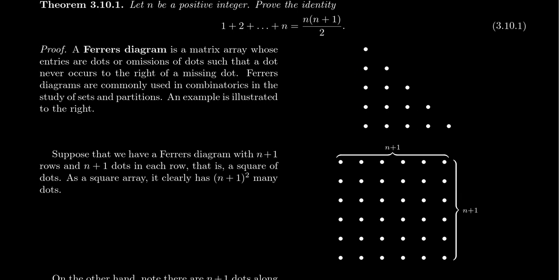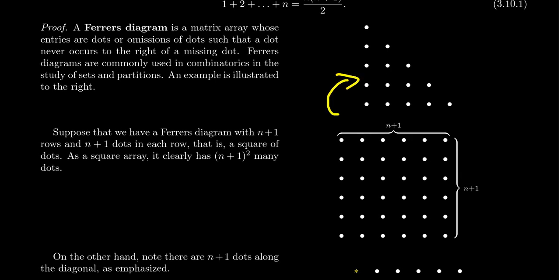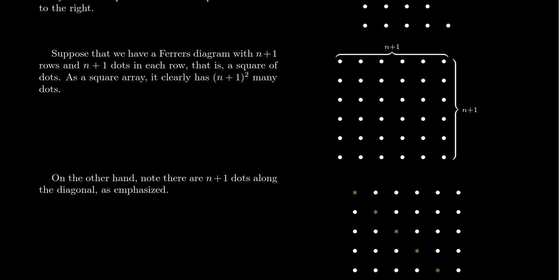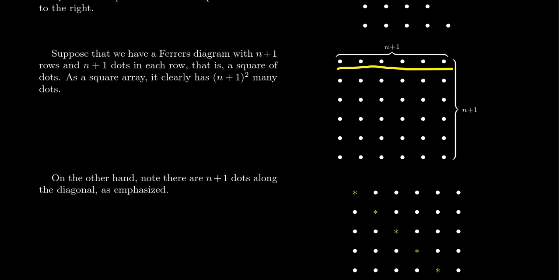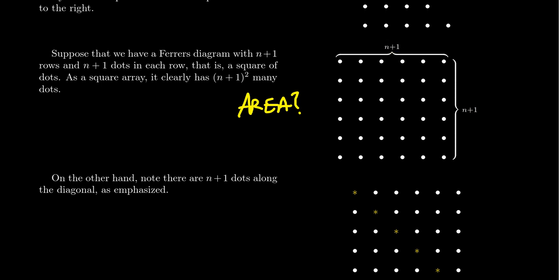Instead, I'm going to consider the Ferris diagram which is an (n+1) × (n+1) square - each row has n+1 dots and each column likewise has n+1 dots. I want to count the area of this Ferris diagram. With the first attempt, this is a square with n+1 rows and n+1 columns, so the standard area formula applies: the number of dots is going to be (n+1)², which is (n+1) times (n+1). That's our first count of how many dots are in this square.